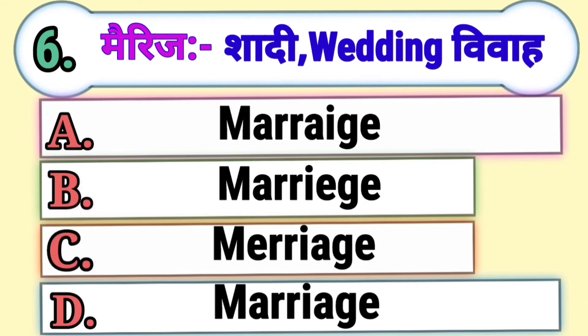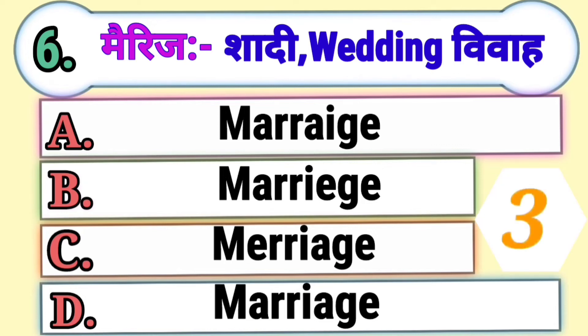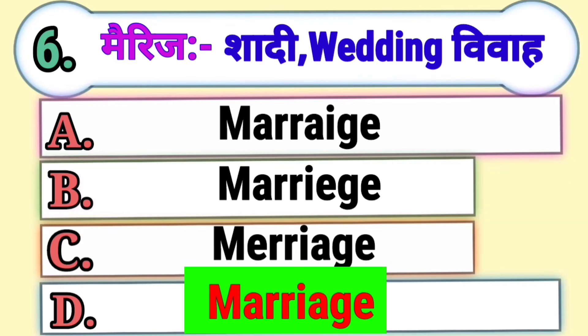Question 6. Marriage means Shadi, Wedding, or Viva. Which is the correct spelling of marriage? Option A, Option B, Option C, or Option D. The correct answer is Option D, Marriage.